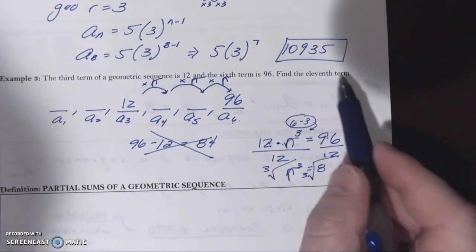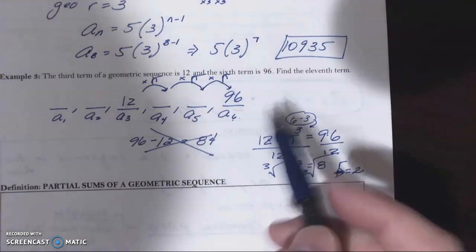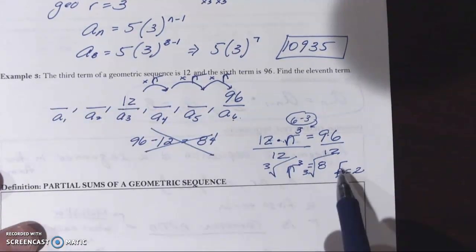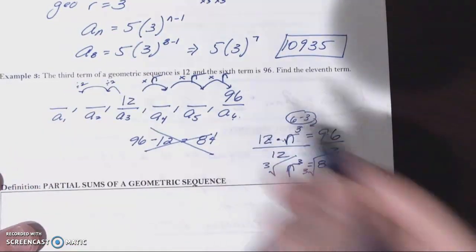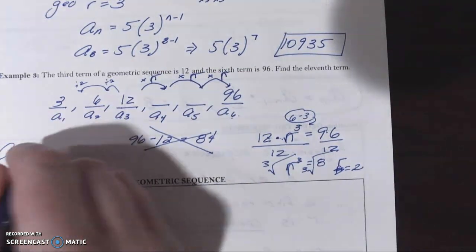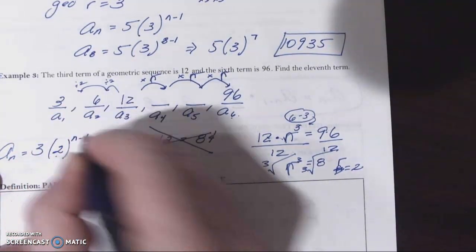It says find the 11th term. Well, let's find the first term and create our explicit formula here. Or we can just multiply by two a few times. But if we're working backwards and the common ratio is two, well then I'll divide by two and divide by two. So we have a six and a three. So the nth term would be the first term, three times the common ratio of two to the n minus one power.